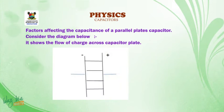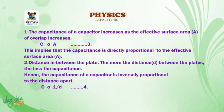Factors affecting the capacitance of a parallel plate capacitor. Consider the diagram below. It shows the flow of charges across the capacitor plate. In the diagram, you have positive side and negative side. One of the factors is the capacitance of a capacitor increases as the effective surface area of overlap increases. That is, C is directly proportional to A. This implies that the capacitance is directly proportional to the effective surface area of A.